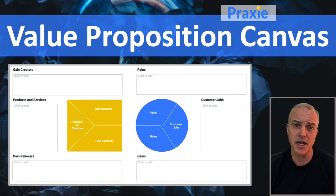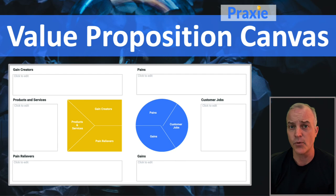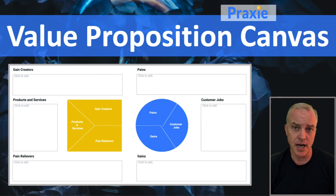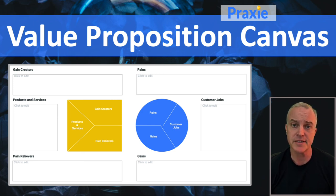The Value Proposition comes into play when you look at the pain it alleviates, the gain it creates on the product side, and then the jobs that are priority jobs to be done for your customer, the pain that currently exists, and the gains that represent opportunities if those jobs are done well. You really want to match up the jobs to be done — the focus of your products and services — with a product or service that has a compelling value proposition that addresses the pains and achieves greater gains.